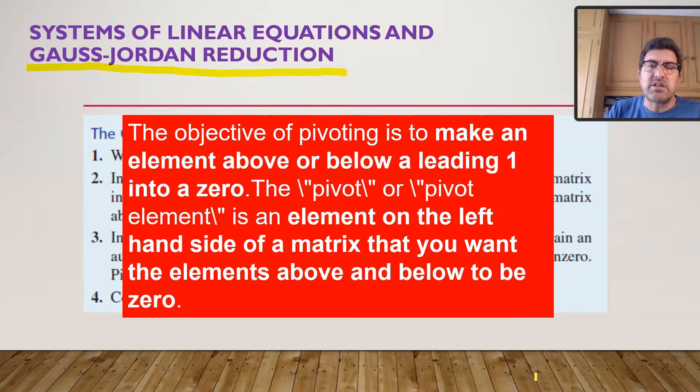What does it mean to pivot? The objective of pivoting is to make an element above or below the leading one into a zero. The pivot or the pivot element is an element on the left-hand side of a matrix that you want the elements above and below to be zero.